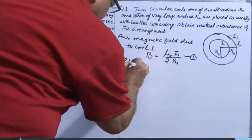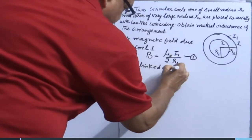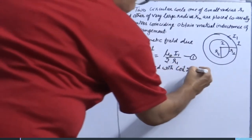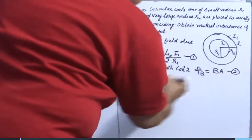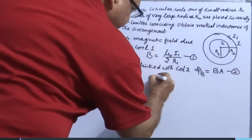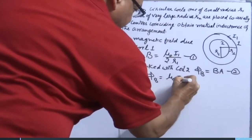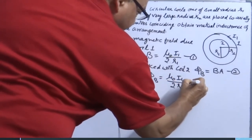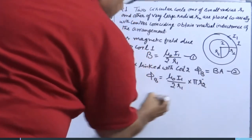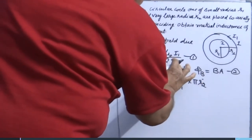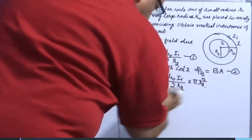Flux linked with the second coil, with coil 2, phi B equals B A. That is phi B equals mu naught I1 over 2R1 into pi R2 square. So this is R2, this will be R1 inner coil, R1 square.